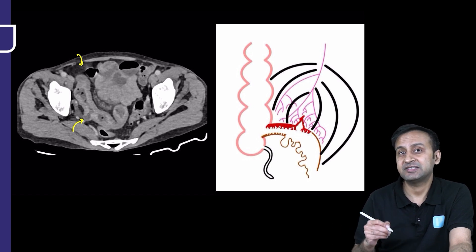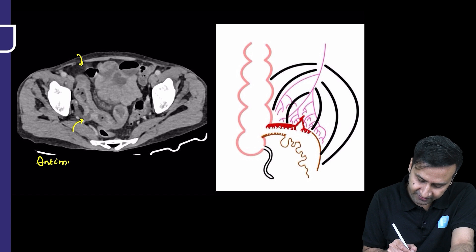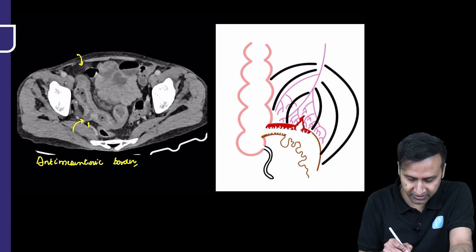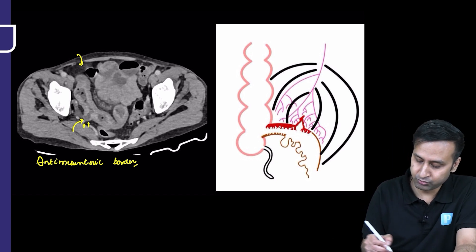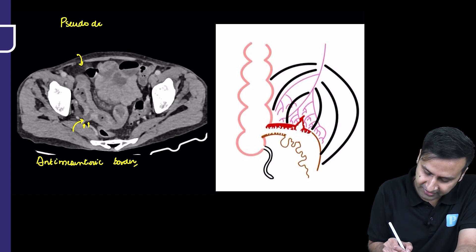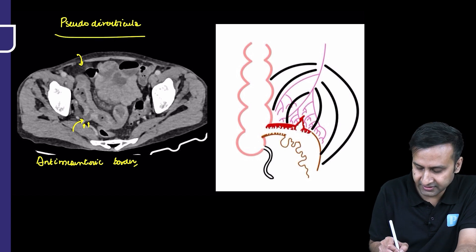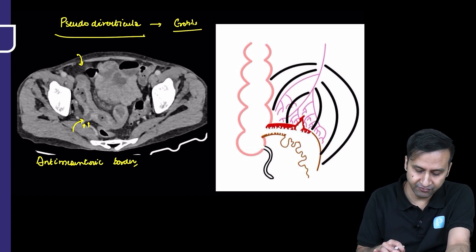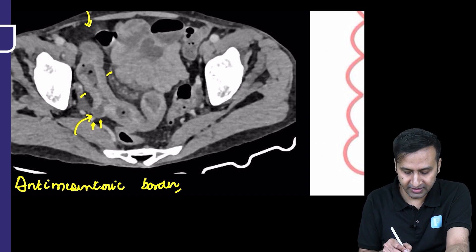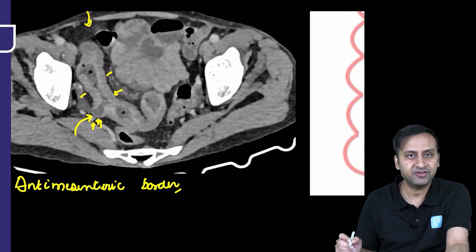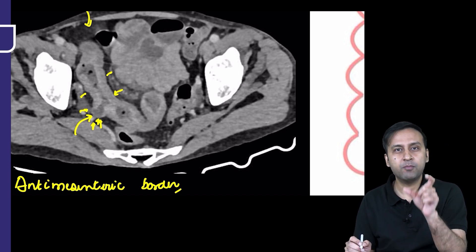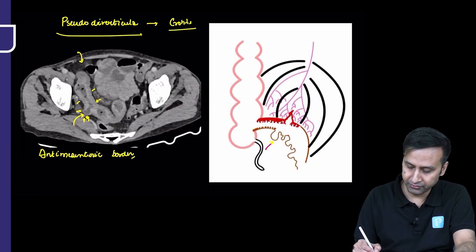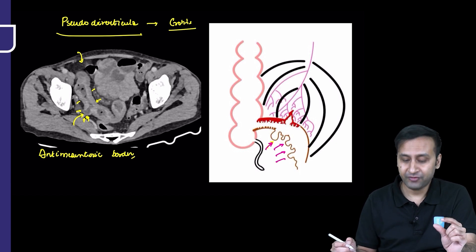The key finding is a small outpouching from the bowel wall, present on the anti-mesenteric border. This is not showing typical wall features like small bubbles, so it is most likely a pseudo-diverticulum. This finding is exceptionally seen in Crohn's and is not expected in tuberculosis. It occurs because there is asymmetric thickening predominantly on the mesenteric aspect, causing the normal anti-mesenteric wall to be pulled in, forming a small outpouching — just like the pleats of a saree.